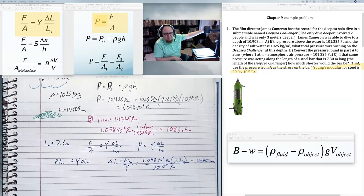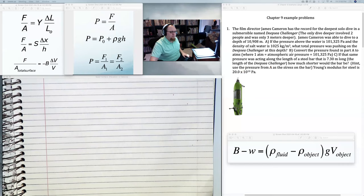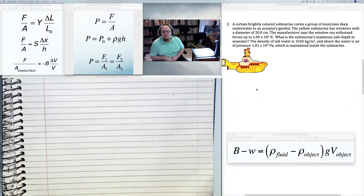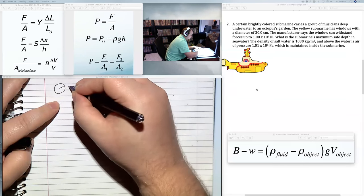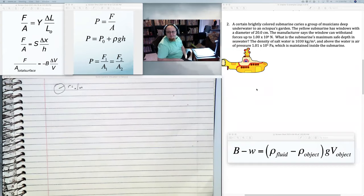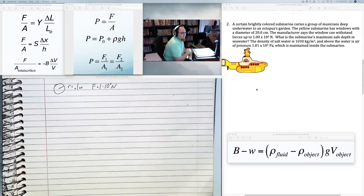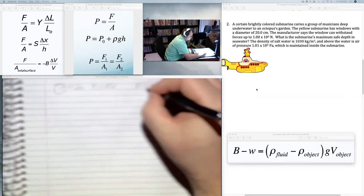When I do pressure as a function of depth, I normally end up doing things underwater just because that's what we normally talk about. But here's another one with more Beatles references than you can normally fit in a problem. A certain brightly colored submarine carries a group of musicians deep underwater to an octopus's garden. The yellow submarine has windows with a diameter of 20 centimeters. If you look at the picture, I said a diameter. That means they're round windows. And if the diameter is 20 centimeters, that means they have a radius of 10 centimeters, or 0.1 meter. The manufacturer says the windows can withstand forces of 1×10⁶ newtons. What is the submarine's maximum safe depth?